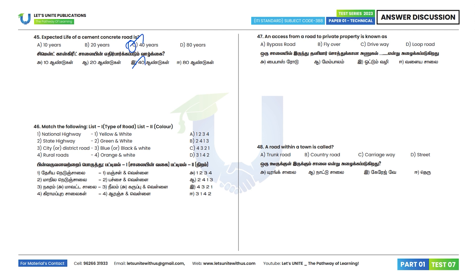46th question: Match the following — national highway is marked yellow and white; state highway is green and white; city or district road is blue or black and white. All options match correctly, so option D (all of the above) is the correct answer.